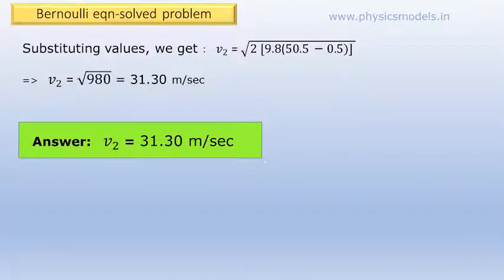We now substitute the values for g and h1 minus h2 and we will get v2 equal to 31.3 meters per second. We have got the answer now and you just notice that we did not use the density of water anywhere. It was not required although it was given in the problem.